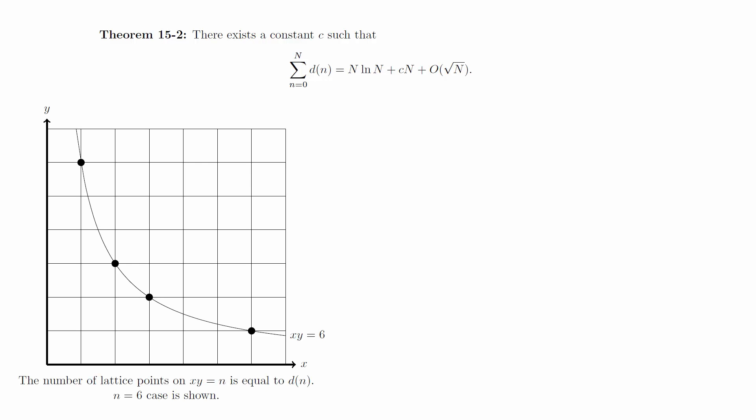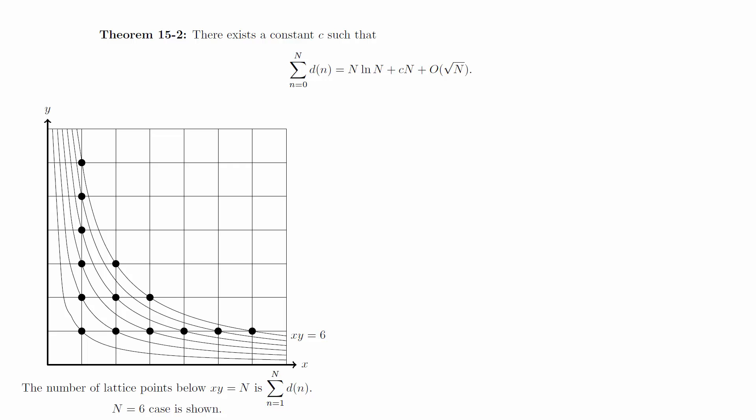Notice that d of n counts the number of lattice points in the first quadrant lying on the hyperbola x times y is equal to n. This means that the sum of d of n is the number of lattice points in the first quadrant on or below the hyperbola x times y is equal to capital N.